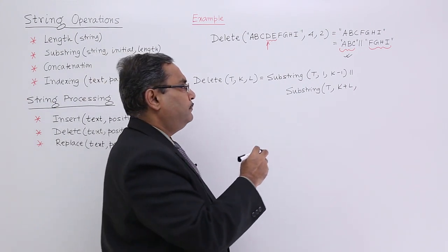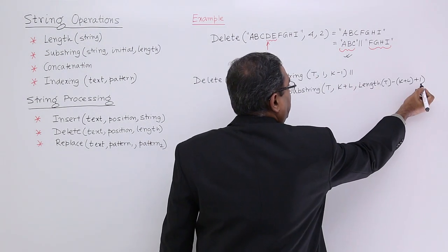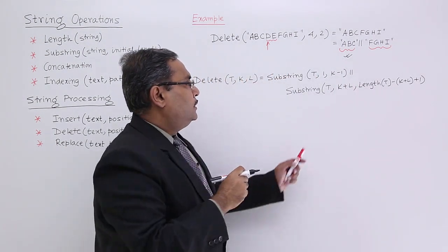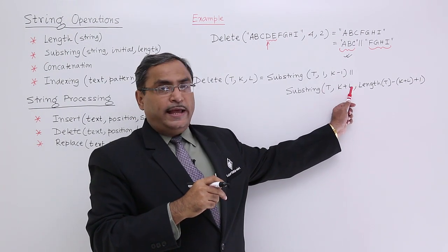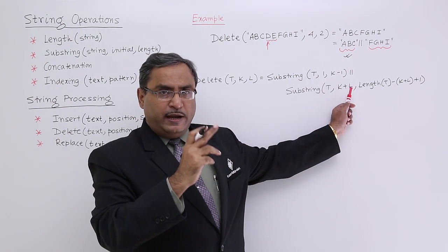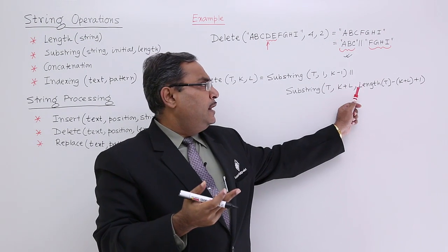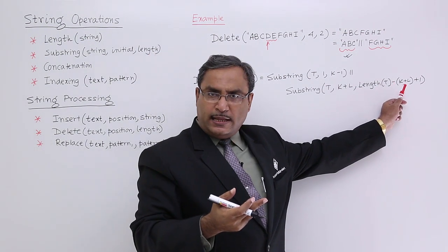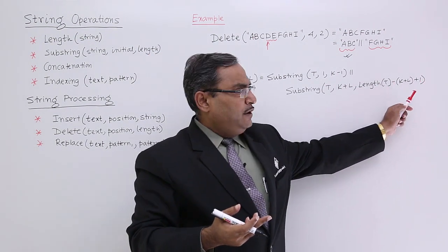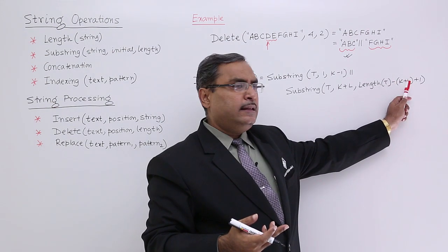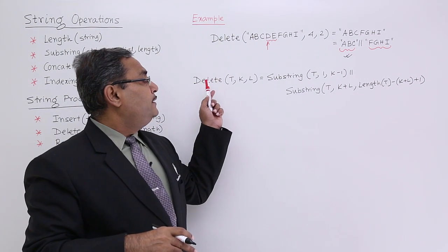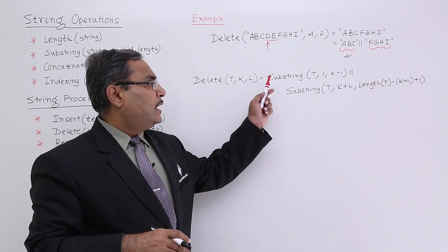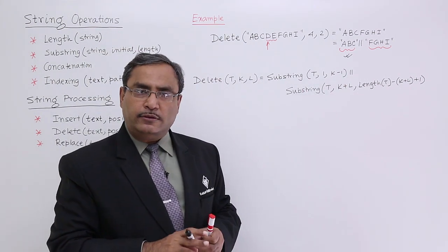In this way I have written. Substring t is the main text from the k plus l-th place, how many characters to be picked up? Length of t minus k plus l plus 1. If I omit these brackets then it will become minus k minus l plus 1, both are same. That is the way to write the delete function using substring and length function.